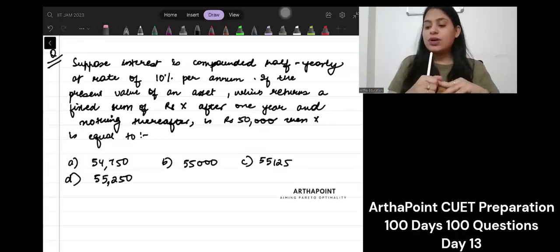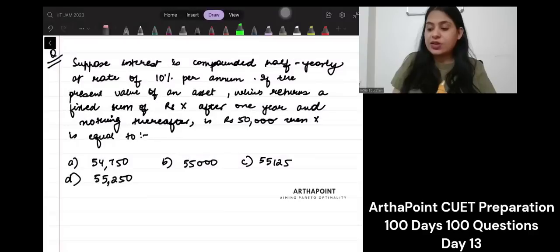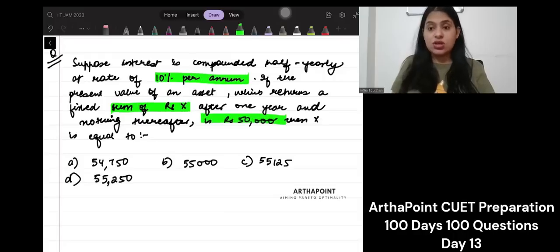Suppose interest rate is compounded half yearly at the rate of 10% per annum. If the present value of asset which returns fixed sum of X after one year and nothing thereafter is 50,000, then X is equal to.